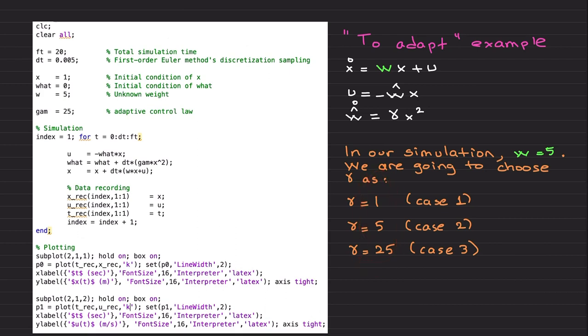This is the extra gamma term. I'm going to choose it like this, so this part of the code changed. The rest for data recording and plotting are the same. In addition to discretizing the system, I also discretized this weight update law. Once again, first-order Euler's method is sufficient at this stage for all of us.